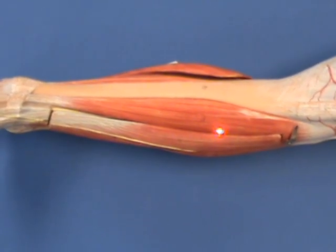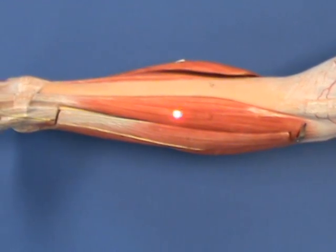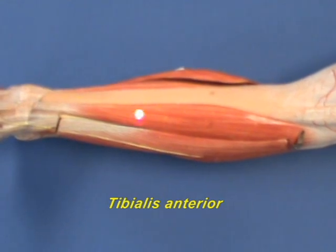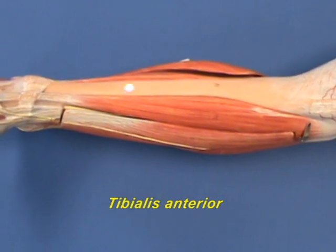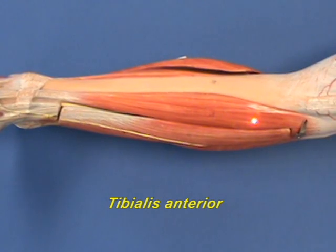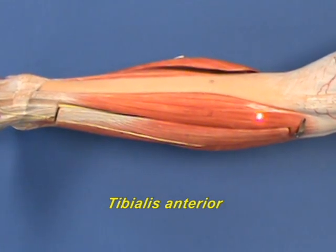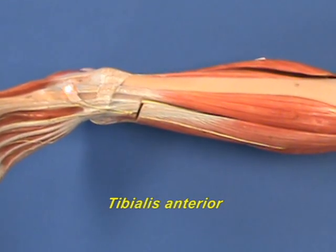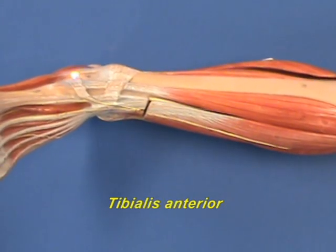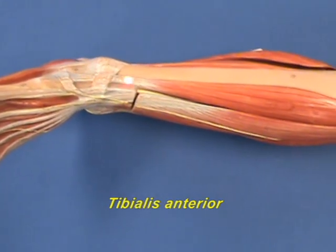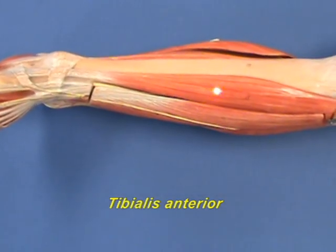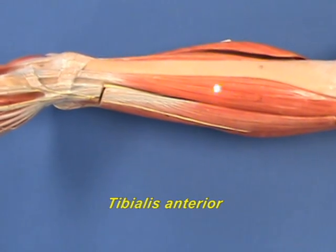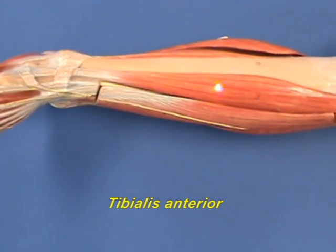Next, we will consider three muscles that are found in the anterior compartment of the leg. This is the tibialis anterior muscle. It is right next to the tibia. It has an origin on the lateral surface of the tibia and inserts onto the medial cuneiform and the base of metatarsal 1. The tibialis anterior inverts the foot and dorsiflexes the foot at the ankle joint.